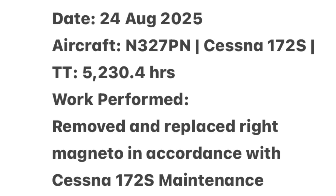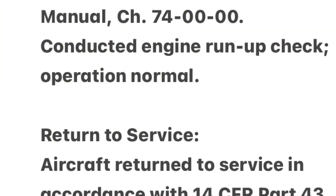Here's a maintenance logbook entry example. Date: August 24th, 2025. Aircraft: November 327 Papa November, Cessna 172 Sierra. Total time: 5,321 hours. Work performed: replaced right magneto in accordance with Cessna 172 Sierra Maintenance Manual, Chapter 7400. Conducted engine run-up check — operations normal.